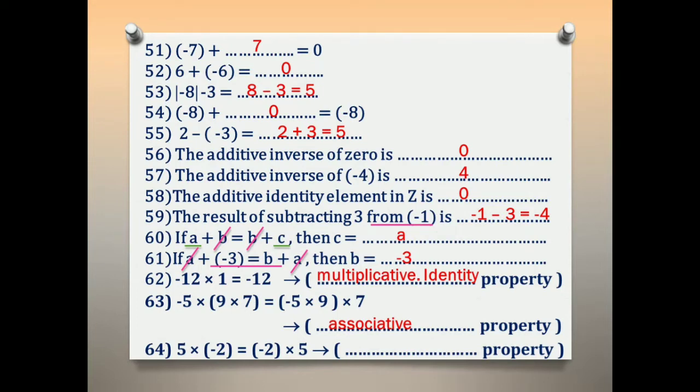Number 64: 5 × negative 2 = negative 2 × 5. We change the places of two numbers. The name of this property is commutative.